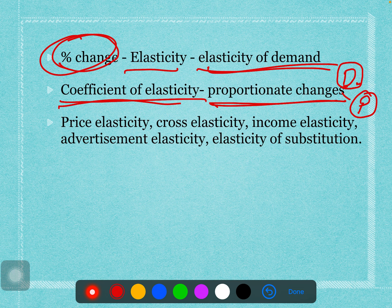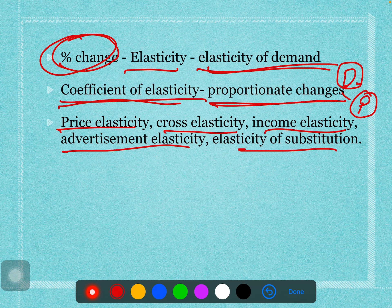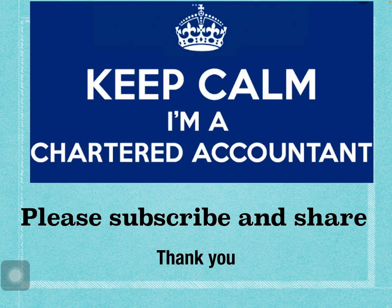In summary, elasticity of demand is the responsiveness of quantity demanded of a good to a change in one of the variables on which demand depends — such as price, price of related goods, income of the consumer, tastes and preferences, or advertisement. There are many types of elasticity: price elasticity, cross elasticity, income elasticity, advertisement elasticity, and elasticity of substitution — all to be covered in future videos. Thank you, please subscribe and share.